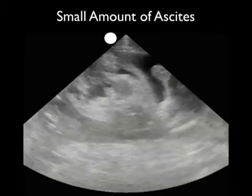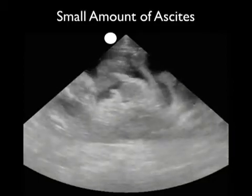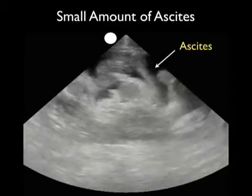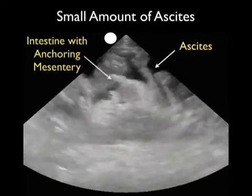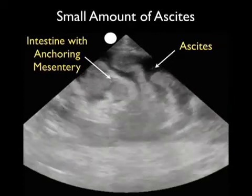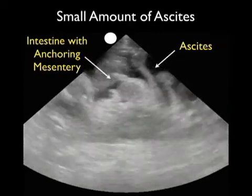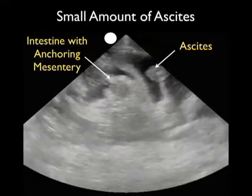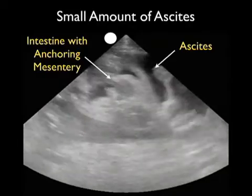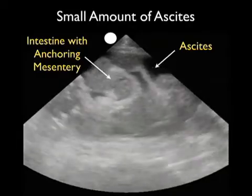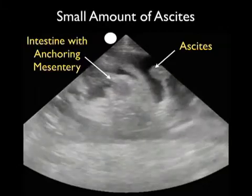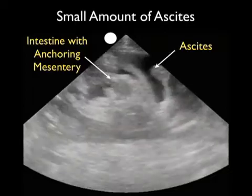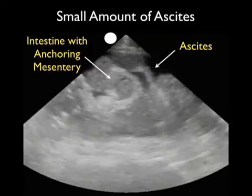This video clip shows a small amount of ascites taken with a 3 MHz probe. We can see the small amount of ascites denoted by that dark or anechoic fluid collection, and we can see the intestine with anchoring mesentery swaying back and forth within the ascites as the patient breathes. This is known as gut sliding, making the intestine look almost like palm trees swaying in a breeze. From this location it might be unsafe to perform a paracentesis, as it could be difficult to get a needle between areas of intestine without puncturing through intestine or mesentery.